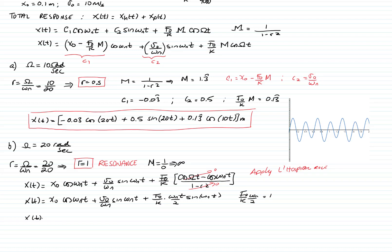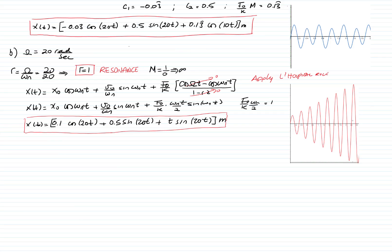The full resonance solution is: 0.1·cos(20t) + 0.5·sin(20t) + t·sin(20t). The graph confirms this — the response grows without bounds.